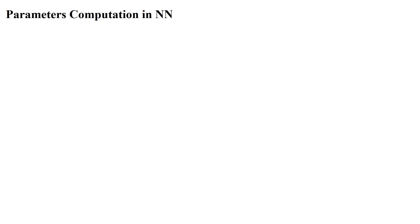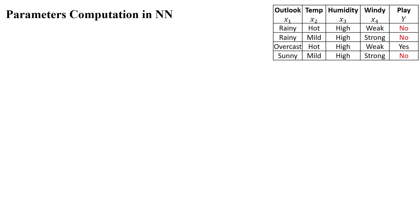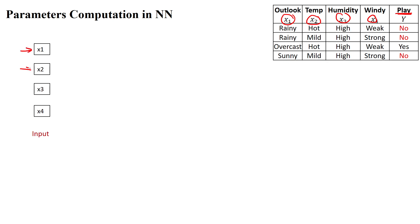Assume we will take text data in the given dataset. Here we are having four features: x1, x2, x3, x4, and the output label capital Y. For these four features, we will take four inputs in vector format. Here, taking the four features as four inputs, we are going to construct the hidden layer with the number of neurons.